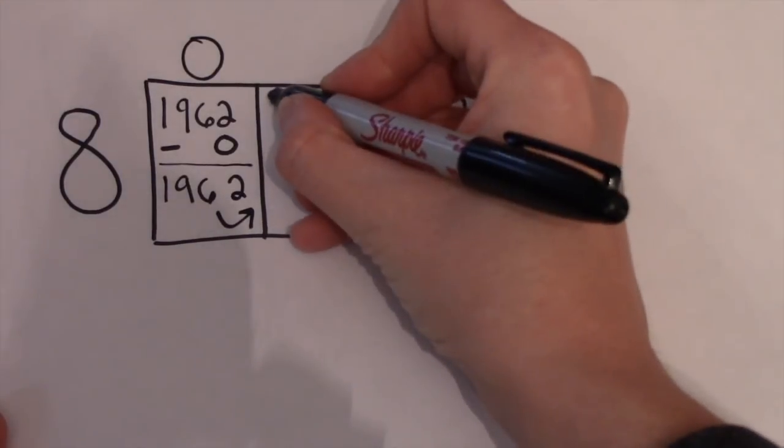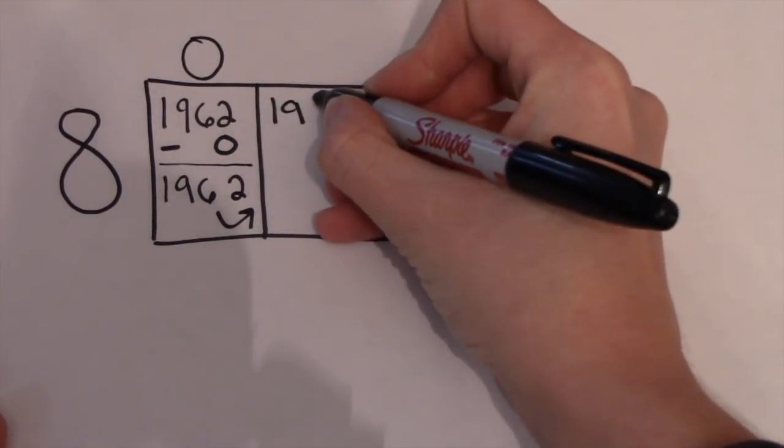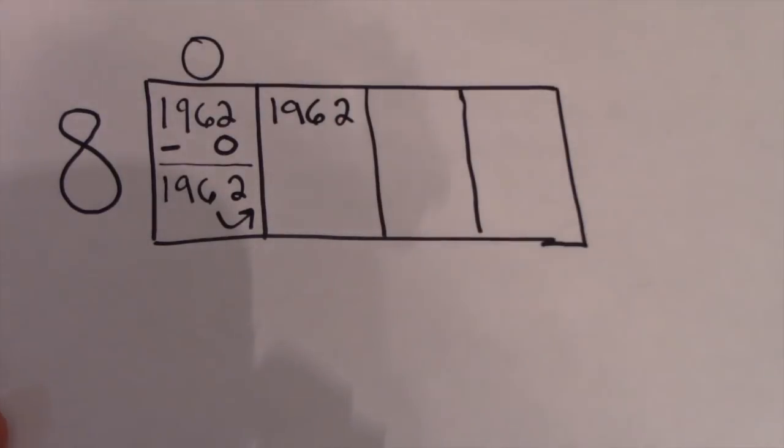Now we are moving on to the hundreds place. So we are going to go ahead and look at our multiples of 8. And now we're going to turn them into multiples of 800. 800, 1,600, 2,400 and it explodes. Therefore, we backtrack to 1,600.